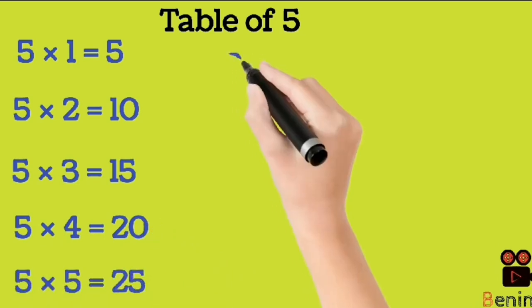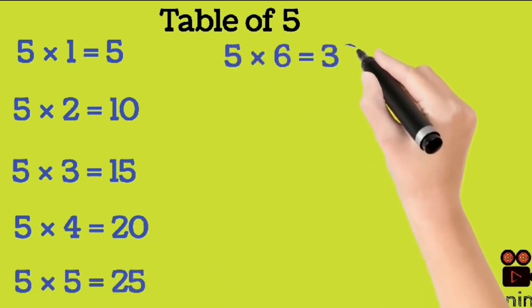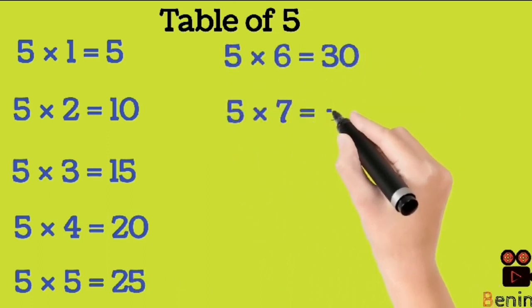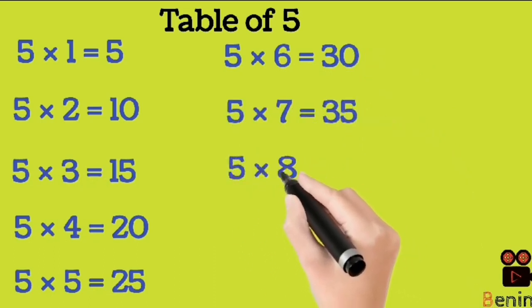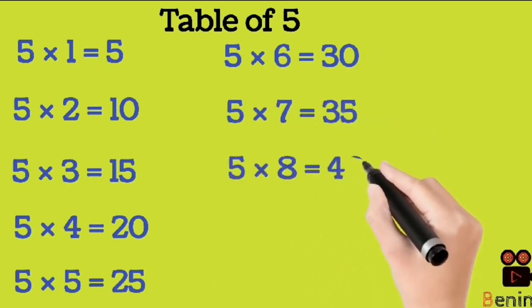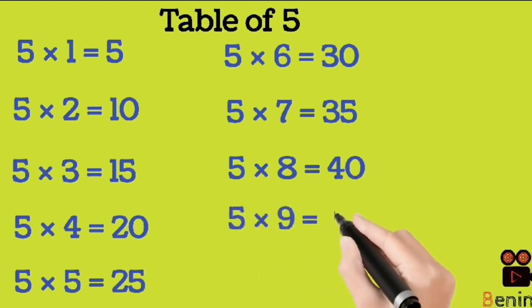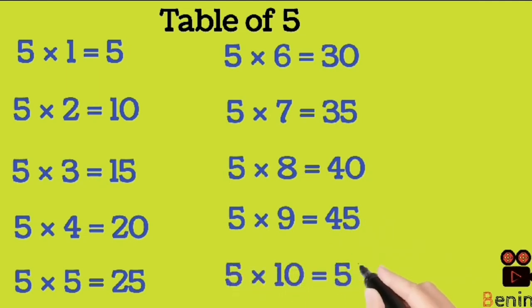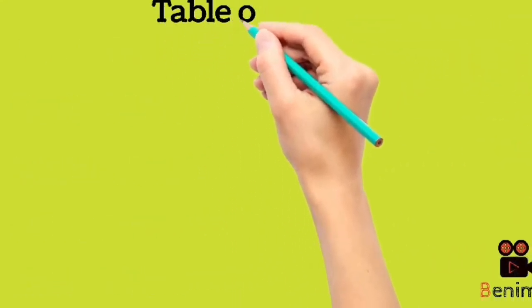5 6s are 30. 5 7s are 35. 5 8s are 40. 5 9s are 45. 5 10s are 50.